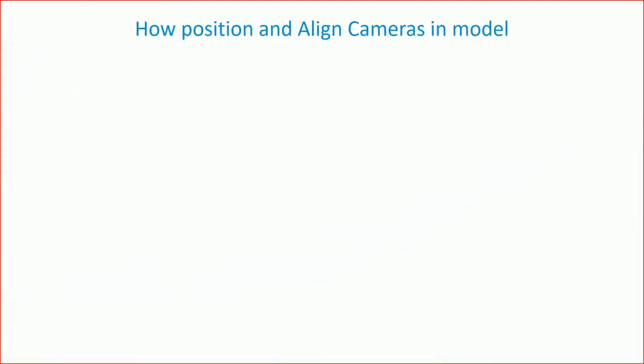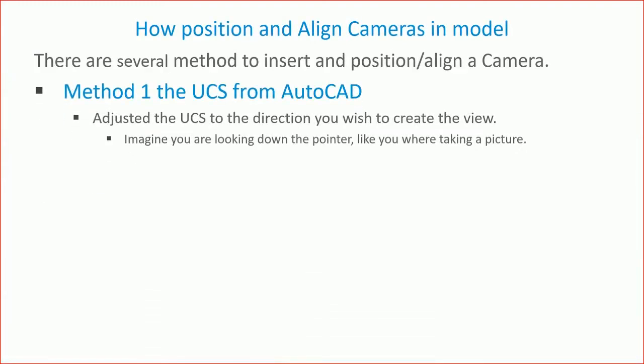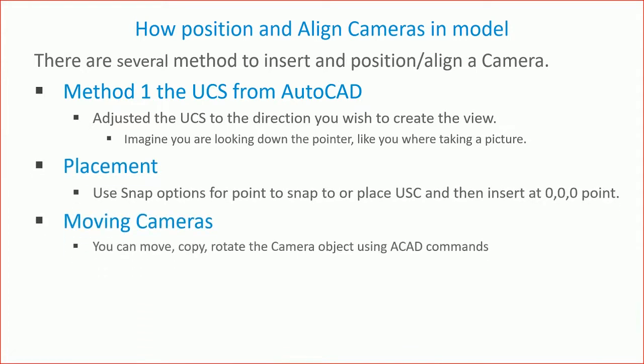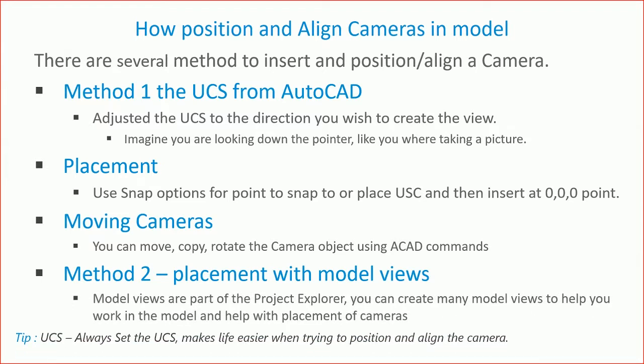Let's start with how you place a camera in the model. It works with the UCS — this was the original method. You set the coordinate system where you want it, set a snap option, and click on the zero-zero point to place the center of the camera there. You can pick cameras up and move them, use AutoCAD rotate and copy tools, even turn them upside down. The big advantage is that the view adjusts to however you adjust the camera.